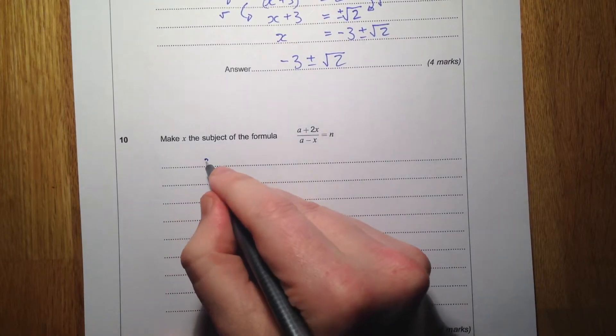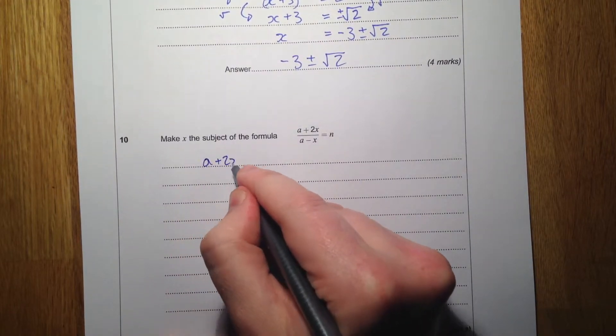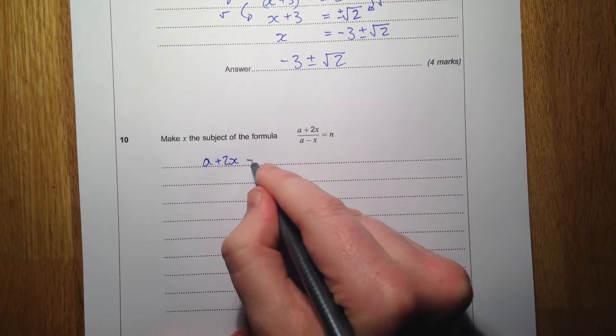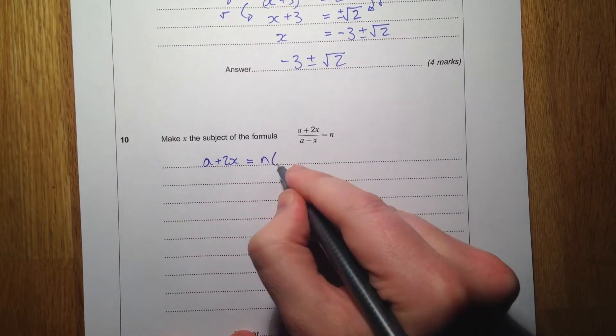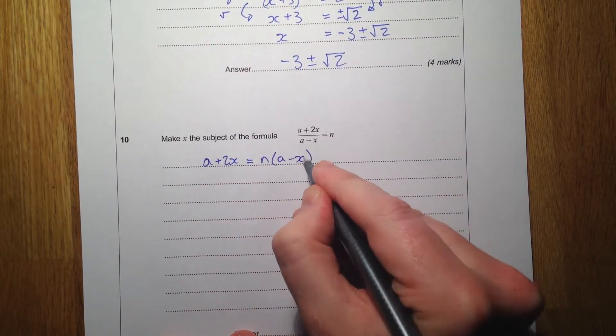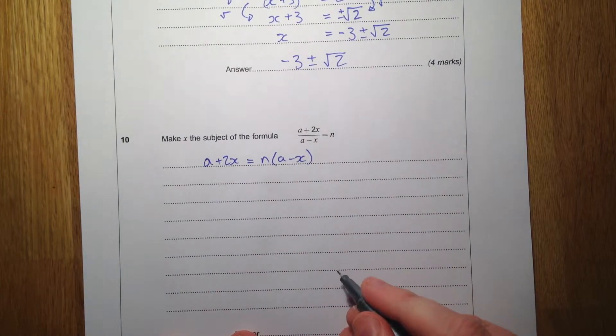Number 10. First of all, let's deal with this denominator. So multiply both sides by the denominator here, a take away x.